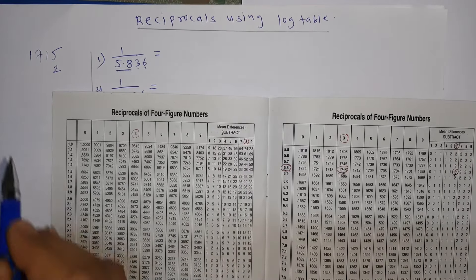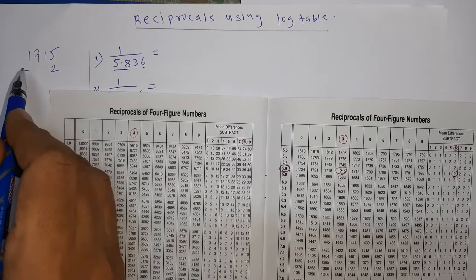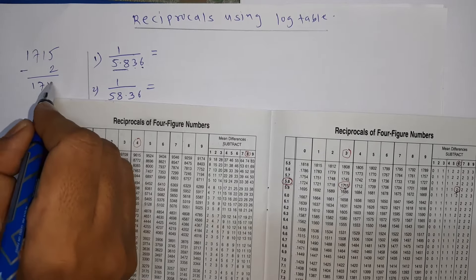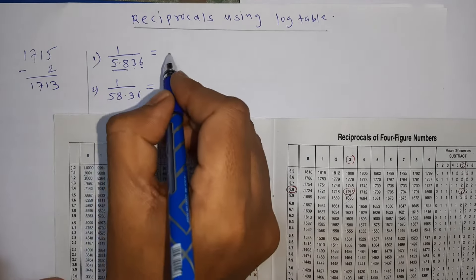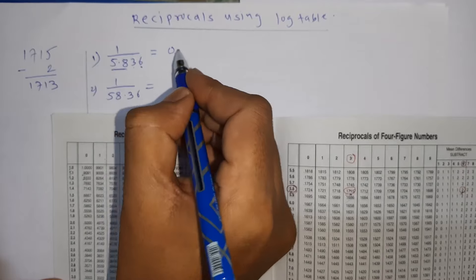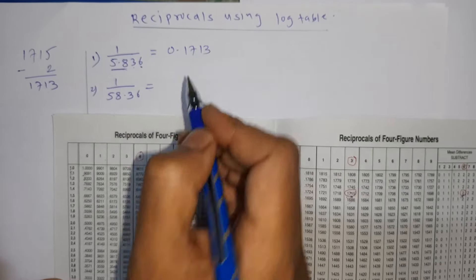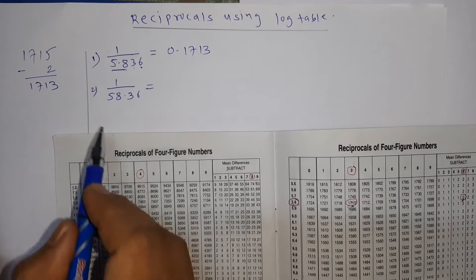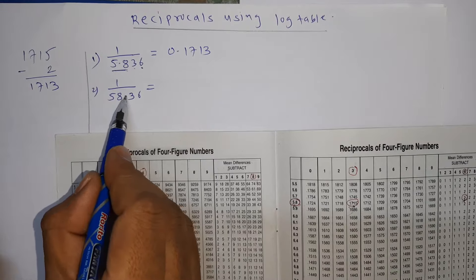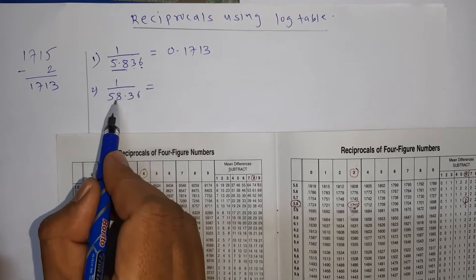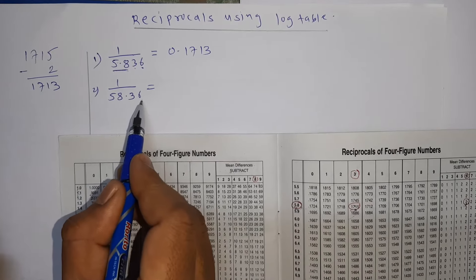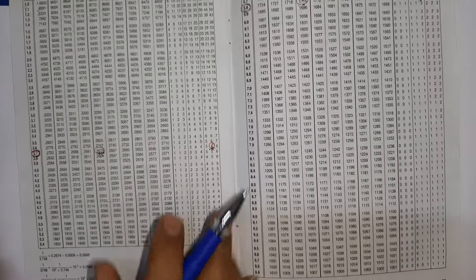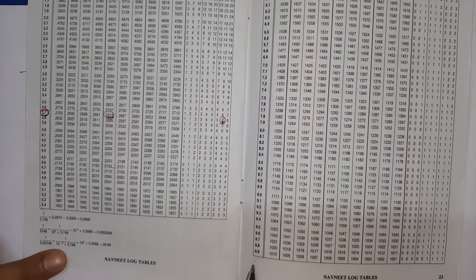We have 5.836 and the mean difference has to be subtracted: 1715 minus 2 gives 1713. So our answer is 0.1713. For the second example, 58.36 — you can see the reciprocal table only goes up to 9.9.